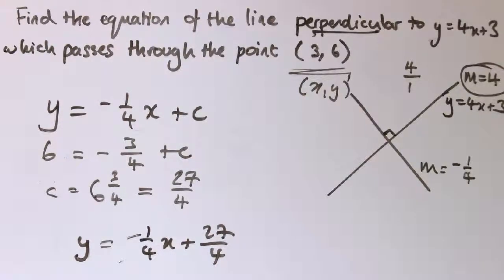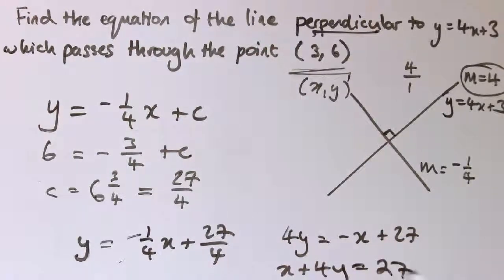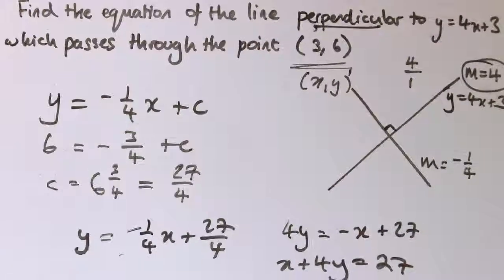So the line that we're looking for is y equals minus 1/4 x plus 27 over 4. And this is probably neater to write this line, multiplying it all by 4, as 4y equals minus x plus 27, or even x plus 4y equals 27. All different forms of the same line.